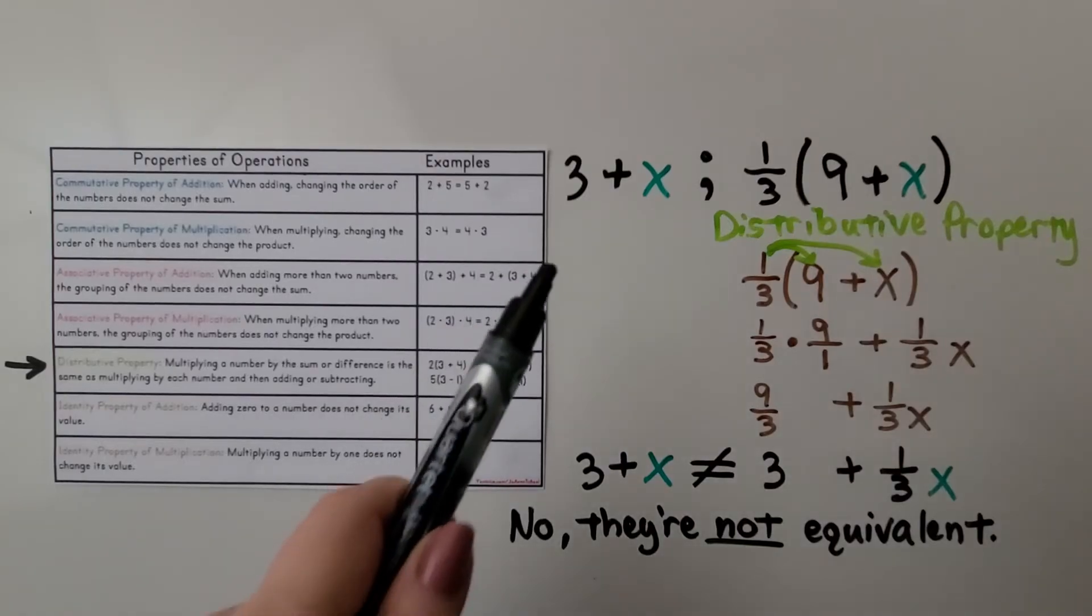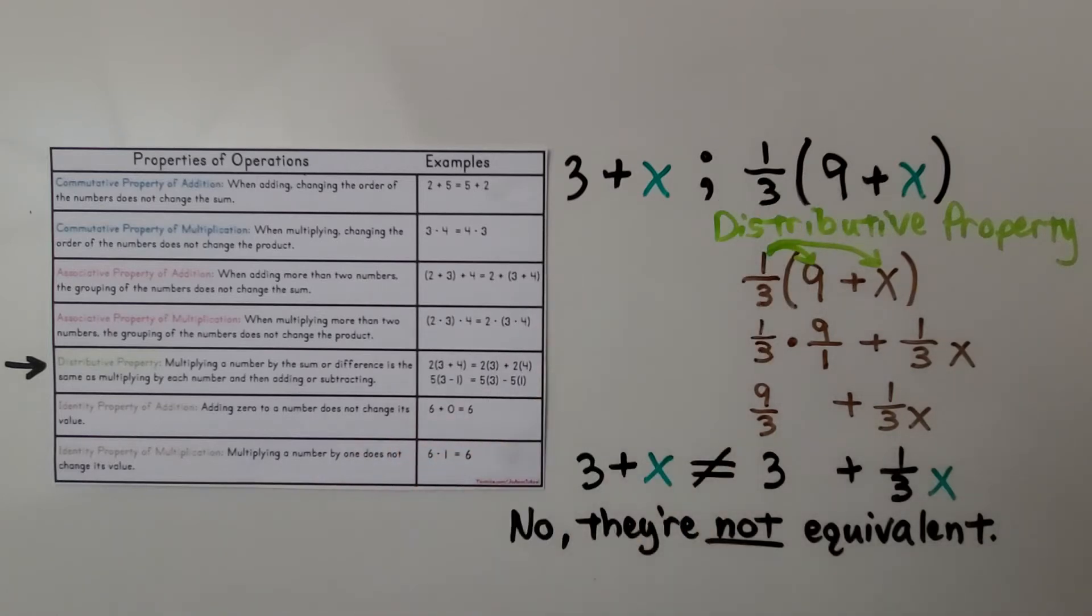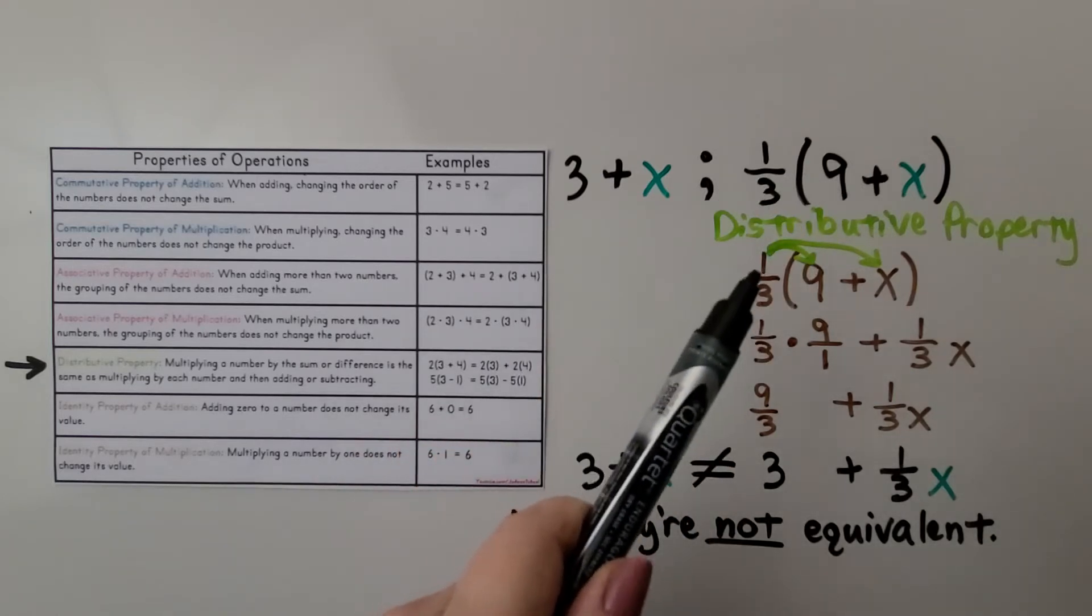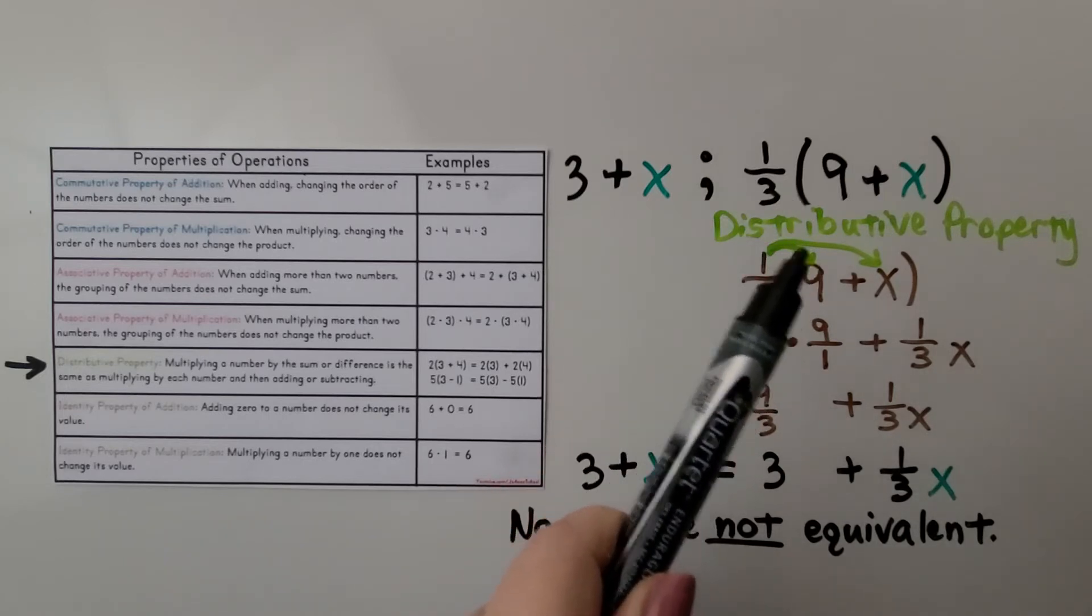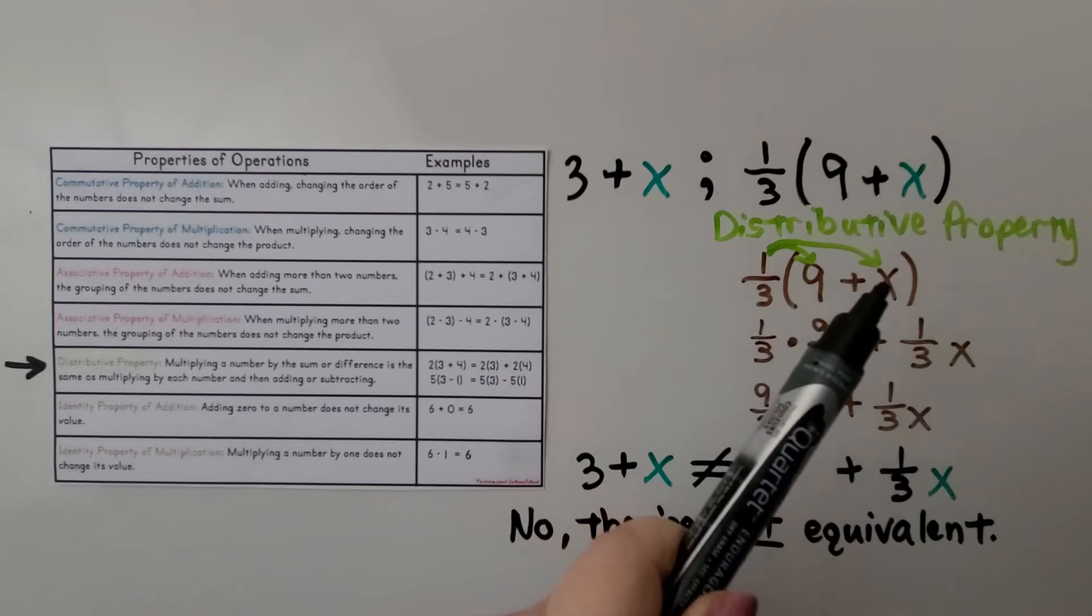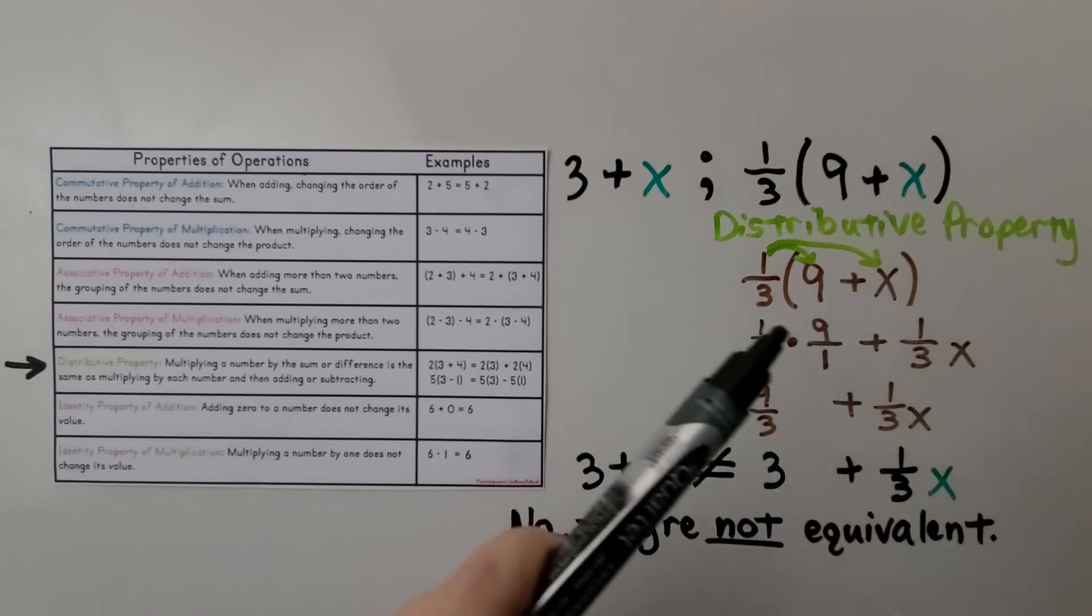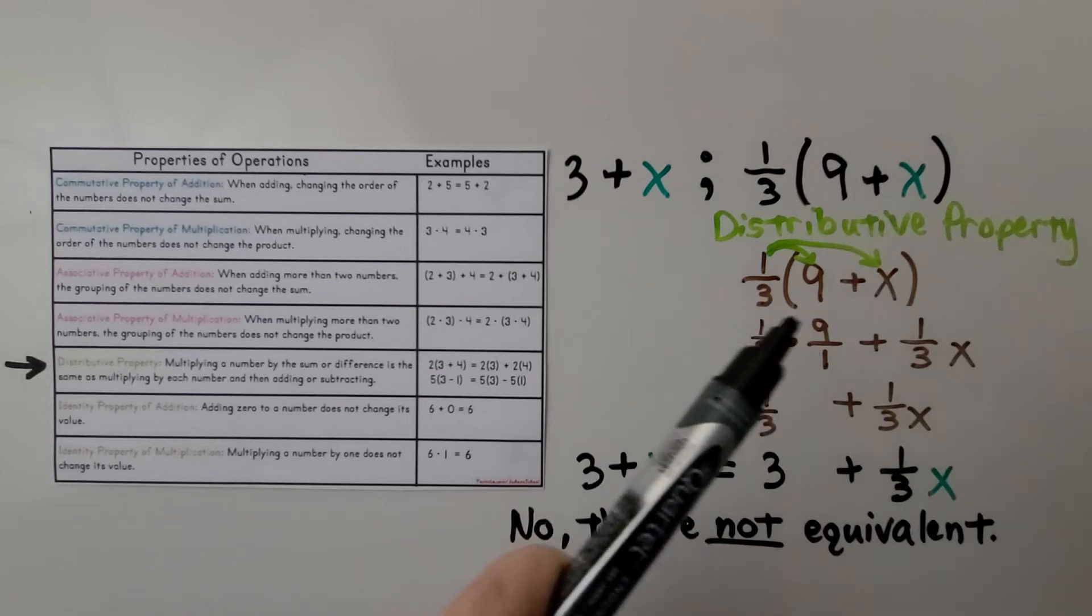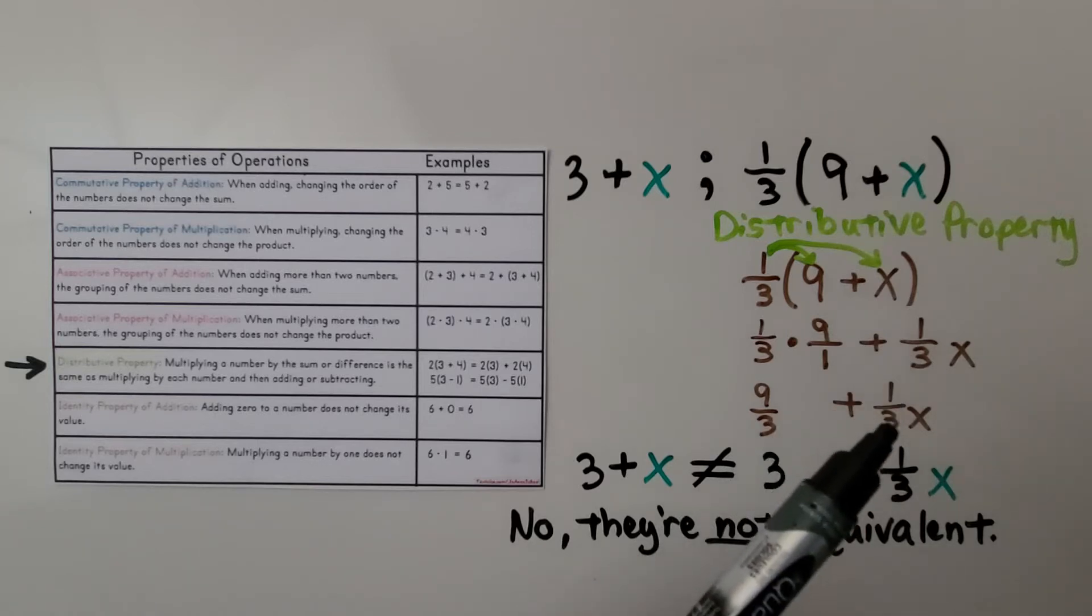Here we've got 3 plus x compared to 1/3 times 9 plus x. We can use the distributive property on this expression. 1/3 times 9 plus 1/3 times x. 1/3 times 9, we can write the 9 over a 1 and multiply straight across. It gives us 9/3. And that simplifies to 3. 9 divided by 3 is 3. And then we have 1/3 x.